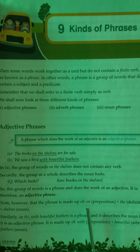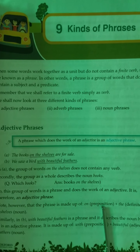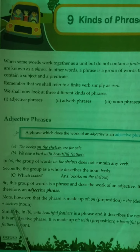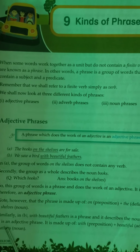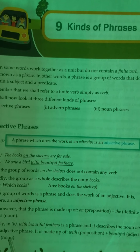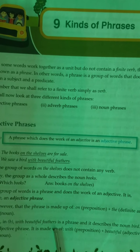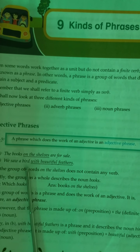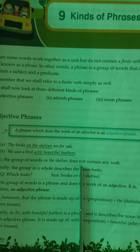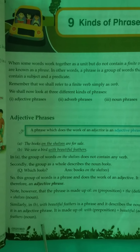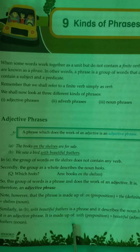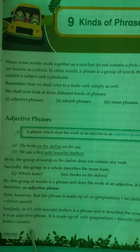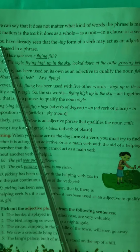Note that the phrase 'on the shelves' is made up of: 'on' (preposition) + 'the' (definite article) + 'shelves' (noun). Similarly, in sentence B — 'We saw a bird with beautiful feathers' — 'with beautiful feathers' is a phrase that describes the noun 'bird.' Which bird? The bird with beautiful feathers. So it is an adjective phrase, made up of: 'with' (preposition) + 'beautiful' (adjective) + 'feathers' (noun).